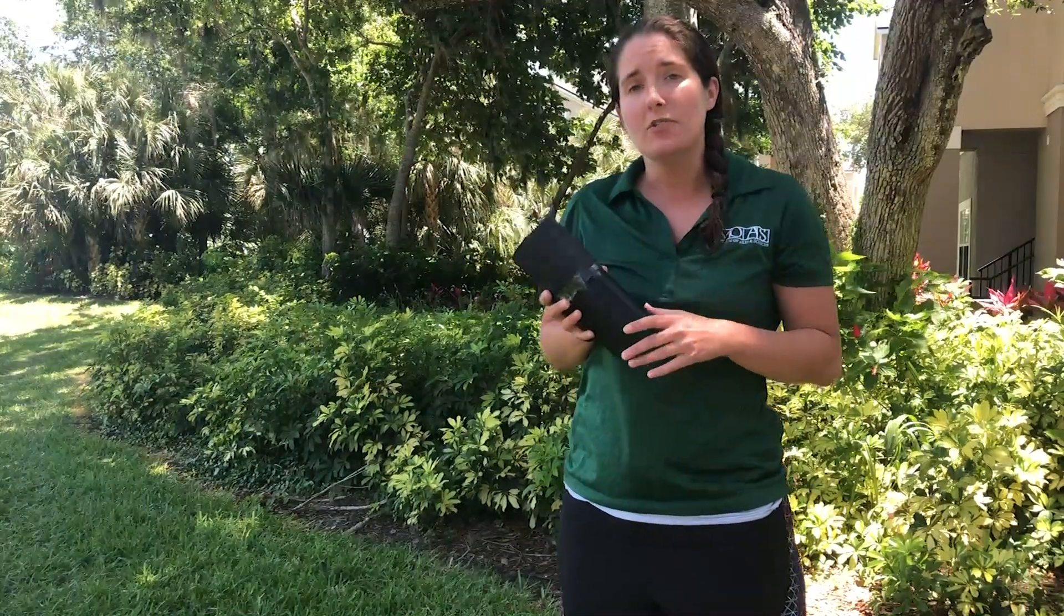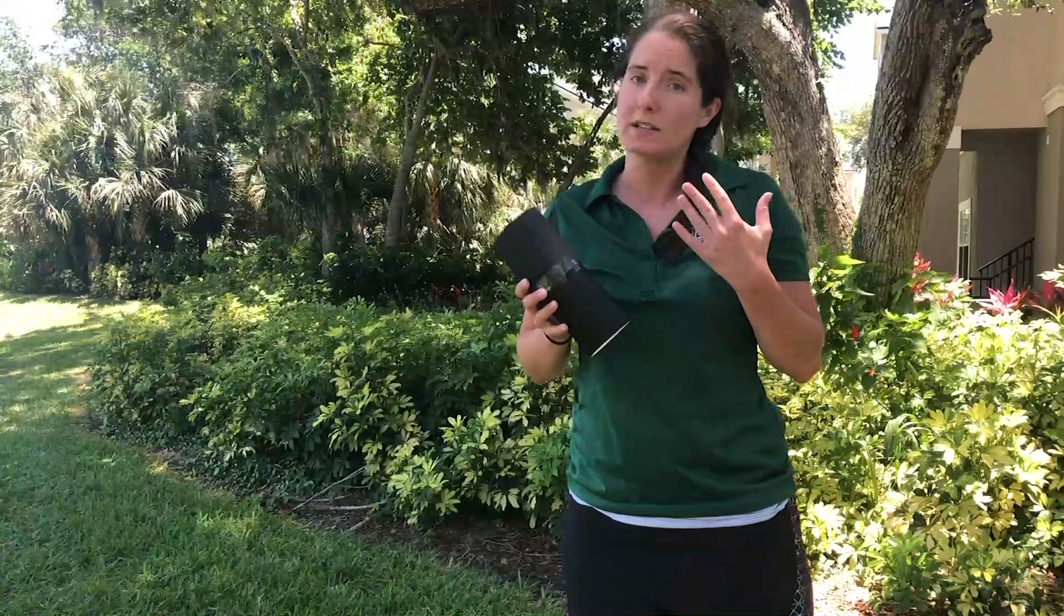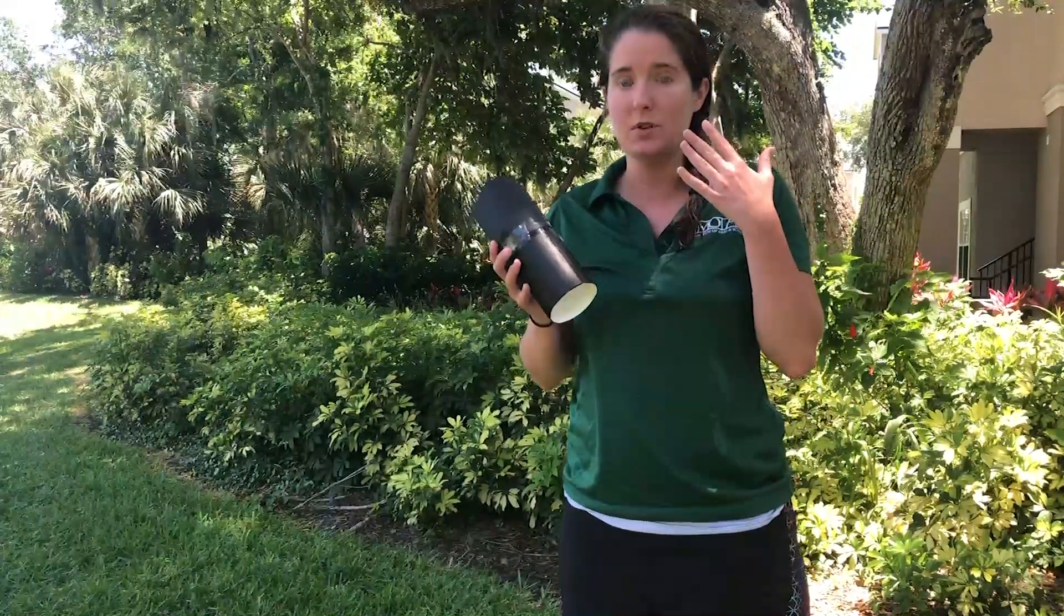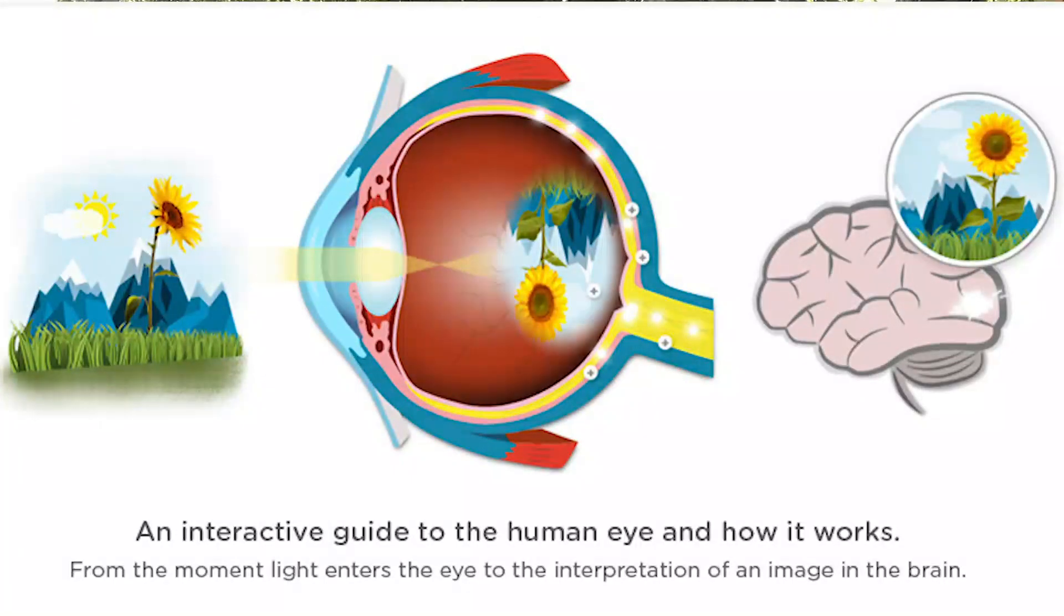The pinhole camera is also another really great way to teach children how their eyes work. So the pinhole at the bottom of the camera works just like your pupil, and the retina is used to screen the image. So when you look through the camera you'll notice that the images are flipped. That's how your eye really sees. Okay, so your brain actually works to flip the image so you can see how it actually is.